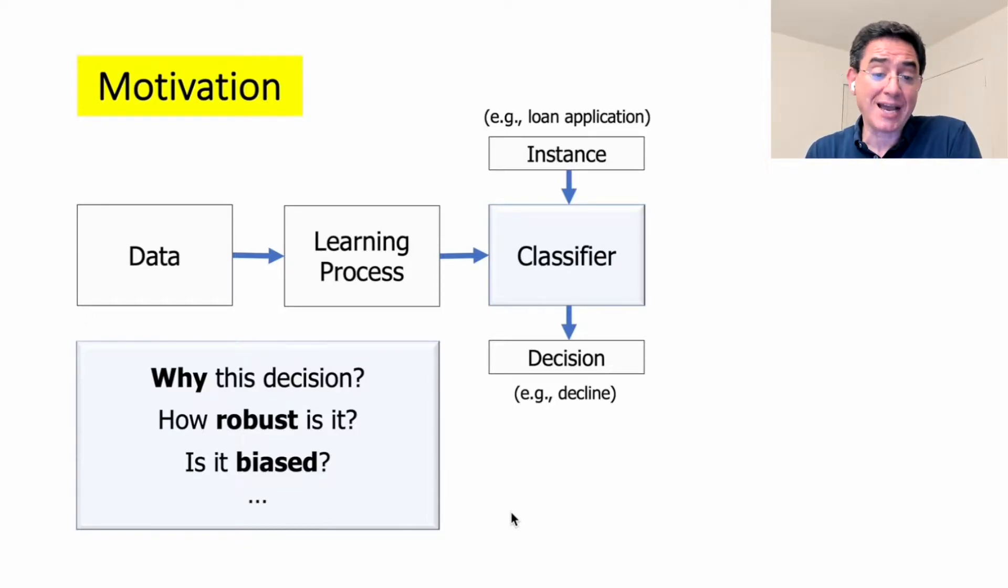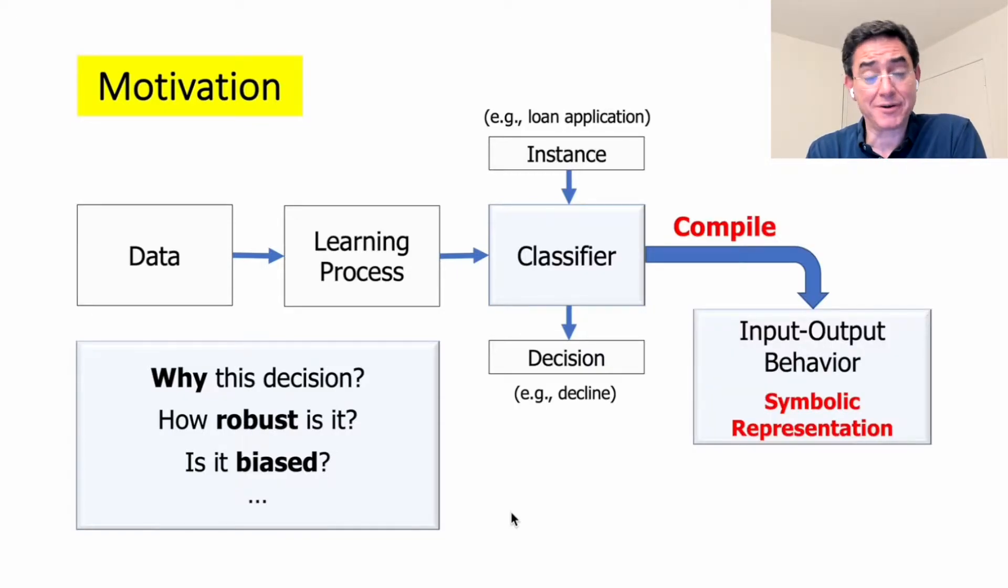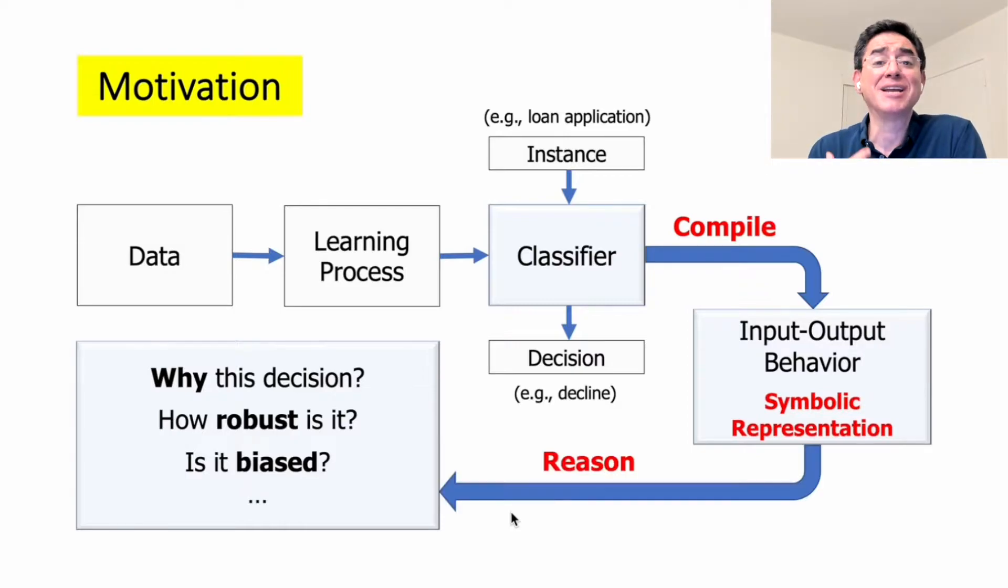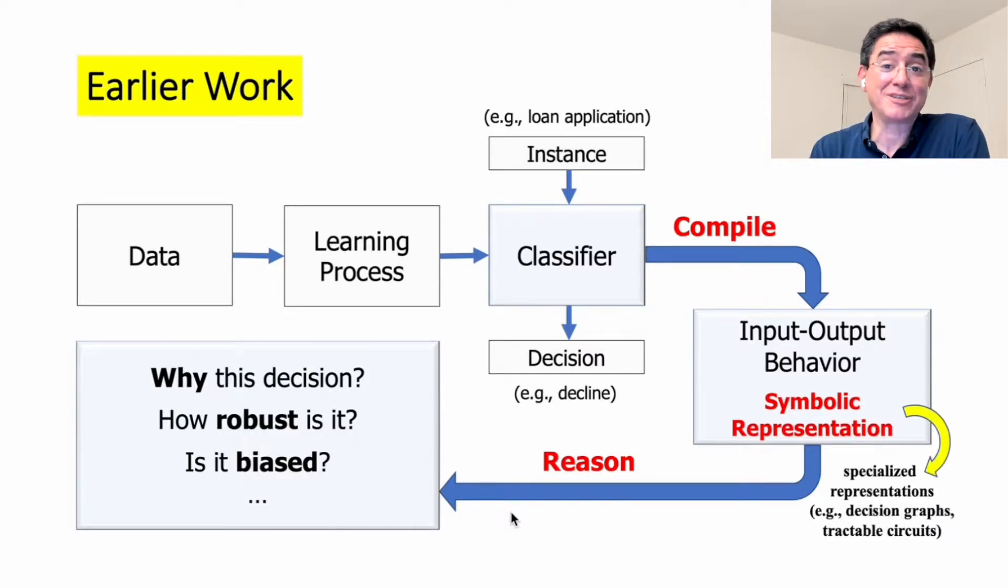Over the last few years, a significant amount of work have tackled these kind of questions by compiling the input-output behavior of the classifier into a symbolic representation and then using reasoning on these representations to answer these questions. In this earlier work, which includes ours, typically people use specialized representations for the input-output behavior, which are meant to facilitate reasoning, like tractable circuits, decision graphs, and then also specialized algorithms